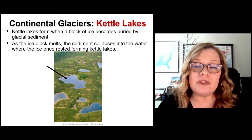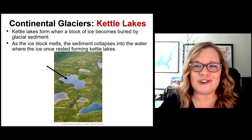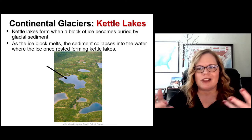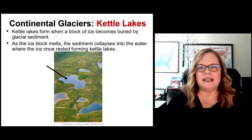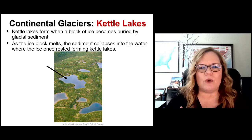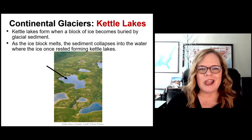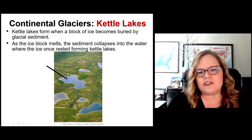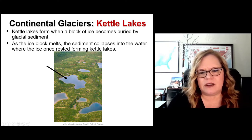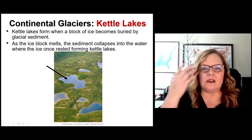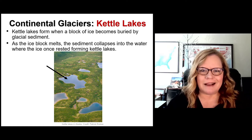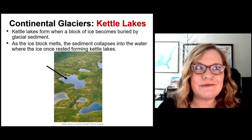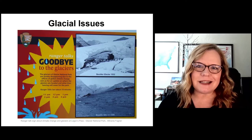Kettle lakes are different from tarns. Tarns are unique to valley glaciers — cirques that fill with water — but kettle lakes form when a block of ice in a continental glacier becomes buried by glacial sediment. Over time the sediment collapses into the hole left by the melting ice, and rainfall accumulates in those depressions. These are all kettle lakes in Alaska. Alaska was once covered by the Cordilleran ice pack — an interesting fact is that Alaska is the state of a million lakes, and one reason is it's filled with kettle lakes.